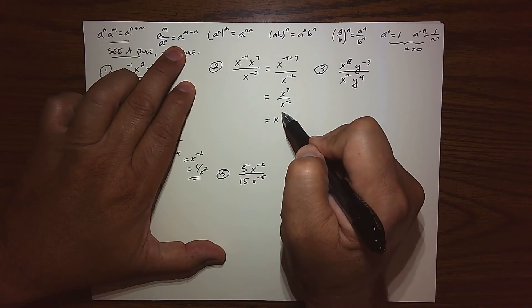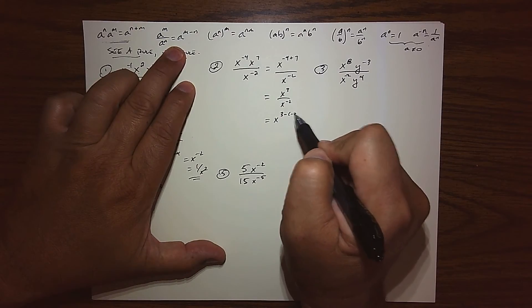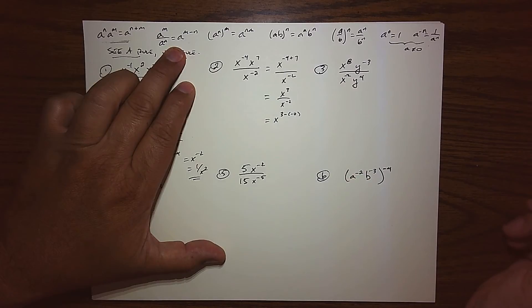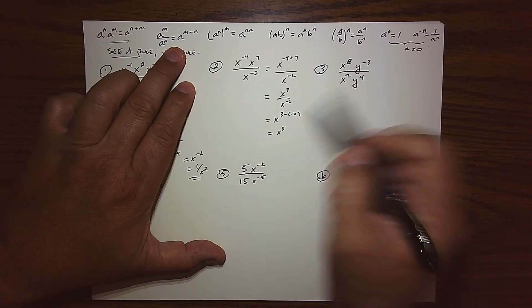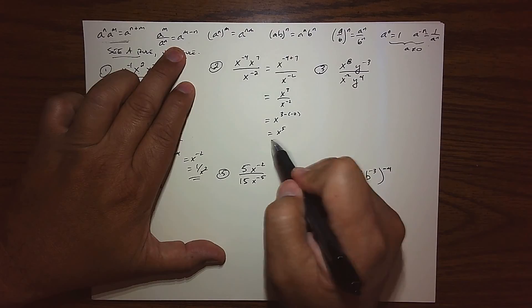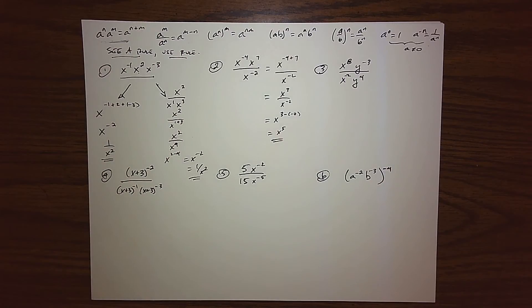Now what I see is an opportunity to use the quotient rule. So I'm going to keep my base. I take my top exponent and subtract my bottom, and that becomes x to the fifth. So that's 3 plus 2. And there's really nothing left to do. There's our final answer.